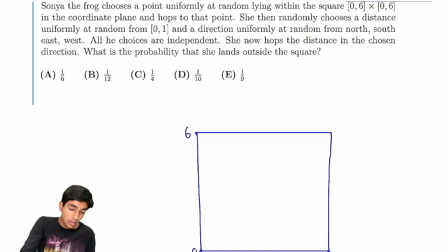The question asks to find the probability that she will land outside the square. So, the key thing here is that if you're in the center, there's no way you can possibly go outside. Sonya has to be near the edge. Only then, if you leave in a direction, can you go outside.